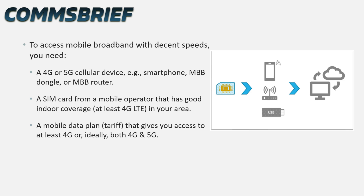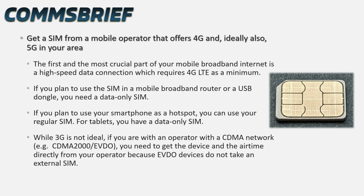Let's go through the steps one by one. The first step is to get a SIM from a mobile operator that offers 4G and ideally also 5G in your area, since 4G LTE is the minimum required for high-speed mobile broadband. If you plan to use the SIM in a mobile broadband router or USB dongle, you need a data-only SIM. If you plan to use your smartphone as a hotspot, you can use your regular SIM. For tablets, you can also use a data-only SIM. Note that if you are with a CDMA operator like CDMA2000 or EVDO, you need to get the device and airtime directly from your operator, as EVDO devices do not take an external SIM.